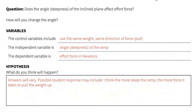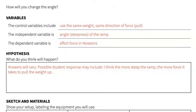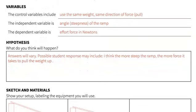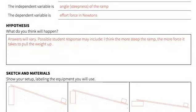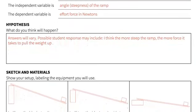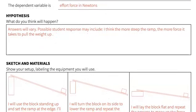As students develop their ideas, they should be able to determine that the constant variables are the weight and direction of force. The independent variable is the angle or steepness of the ramp. The dependent variable is the effort force measured in newtons.